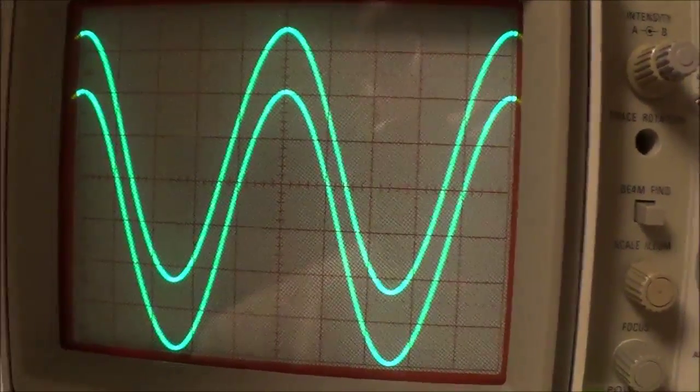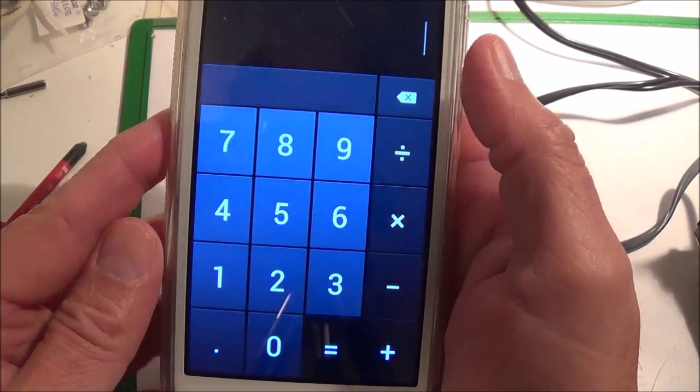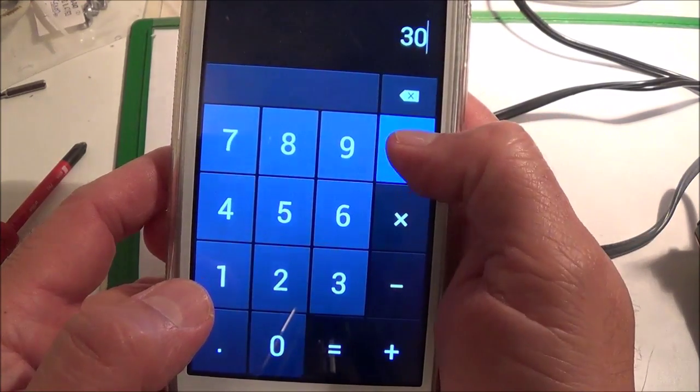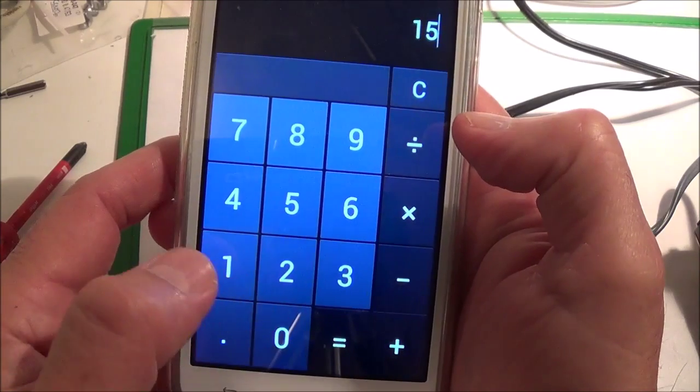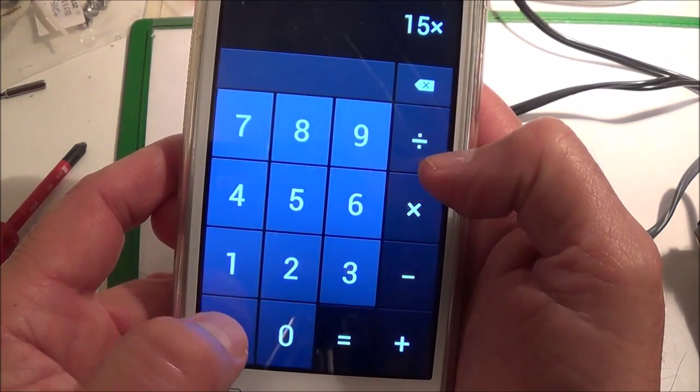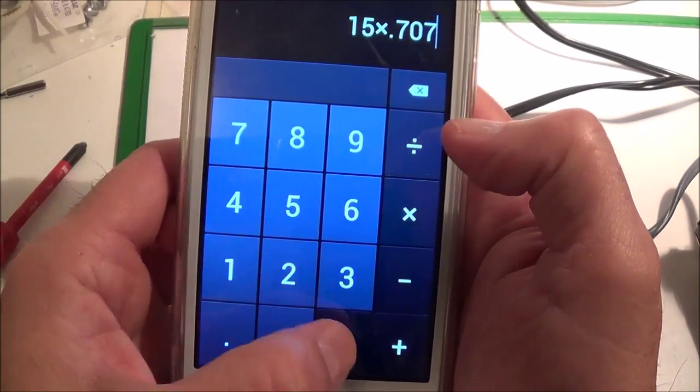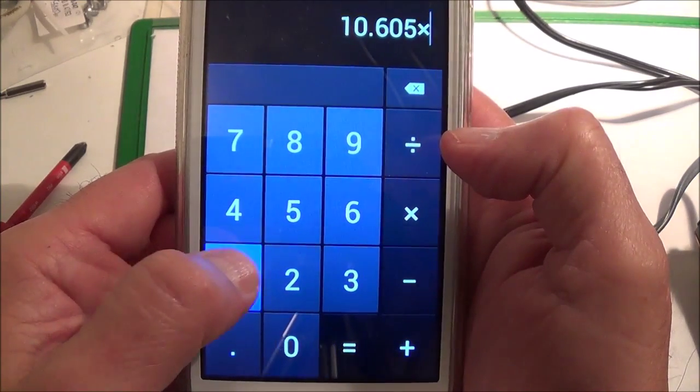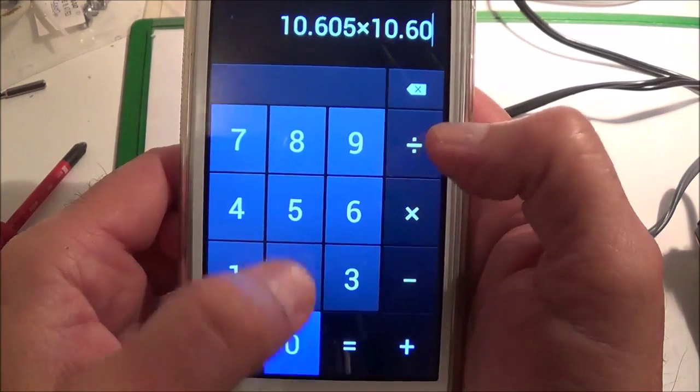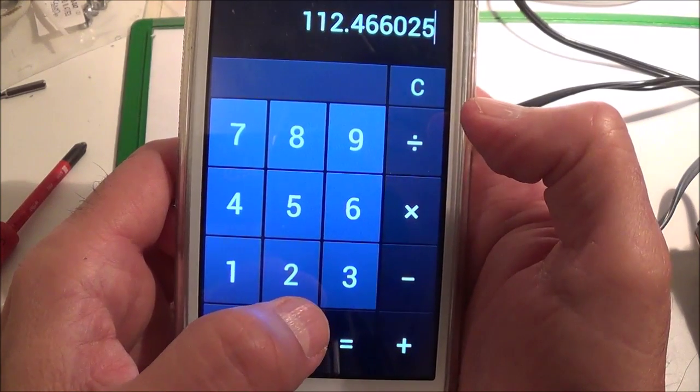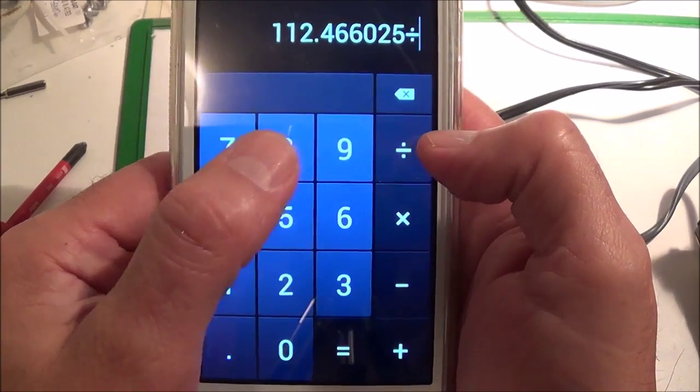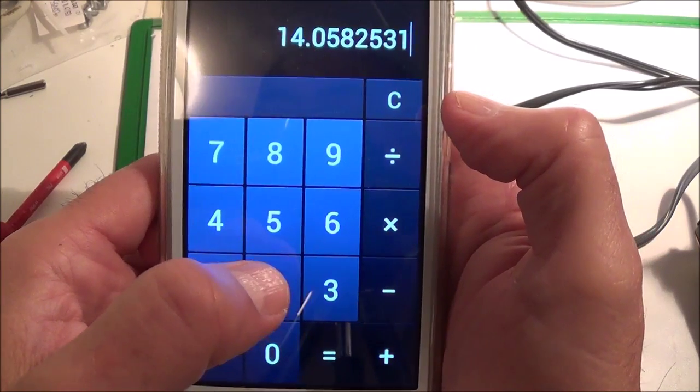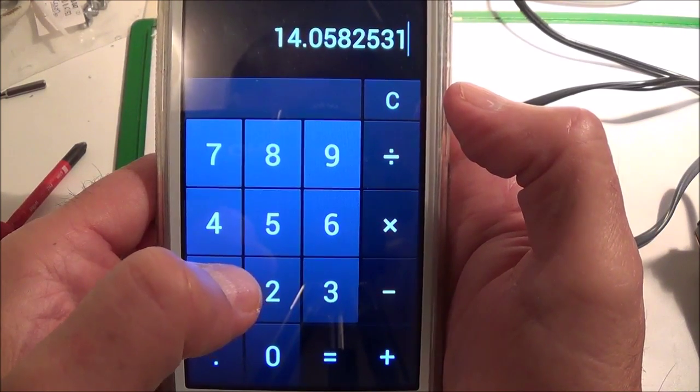So I'm going to do the math now. That was 30 volts peak to peak. I divide that by 2, that gives me the center of the peak voltage. Then I times that by 0.707, that gives me the RMS voltage. Then I times that by itself, square that, 0.605. And then I divide that by 8 ohms because I got an 8 ohm load on there. So I come out to 14 watts.